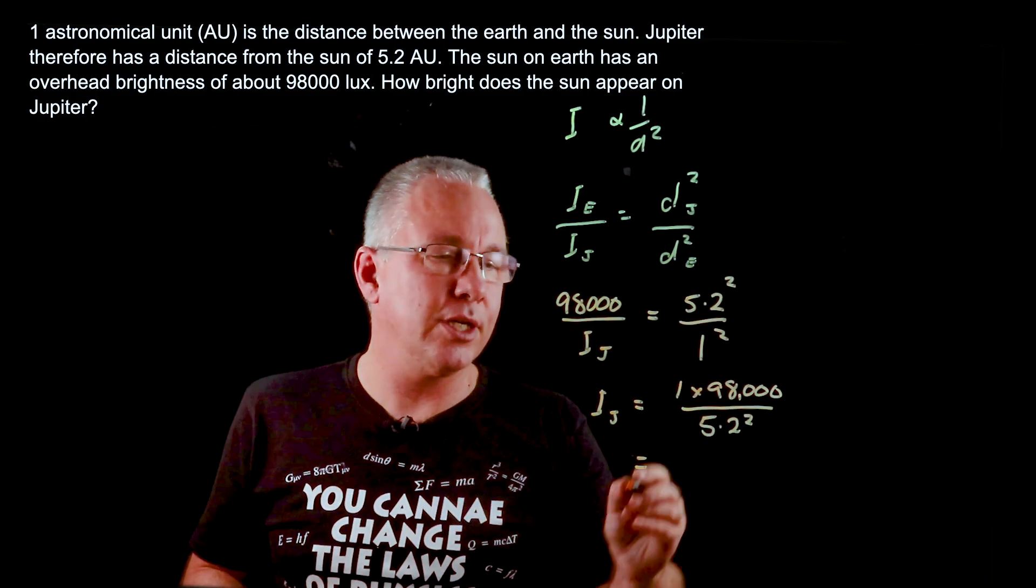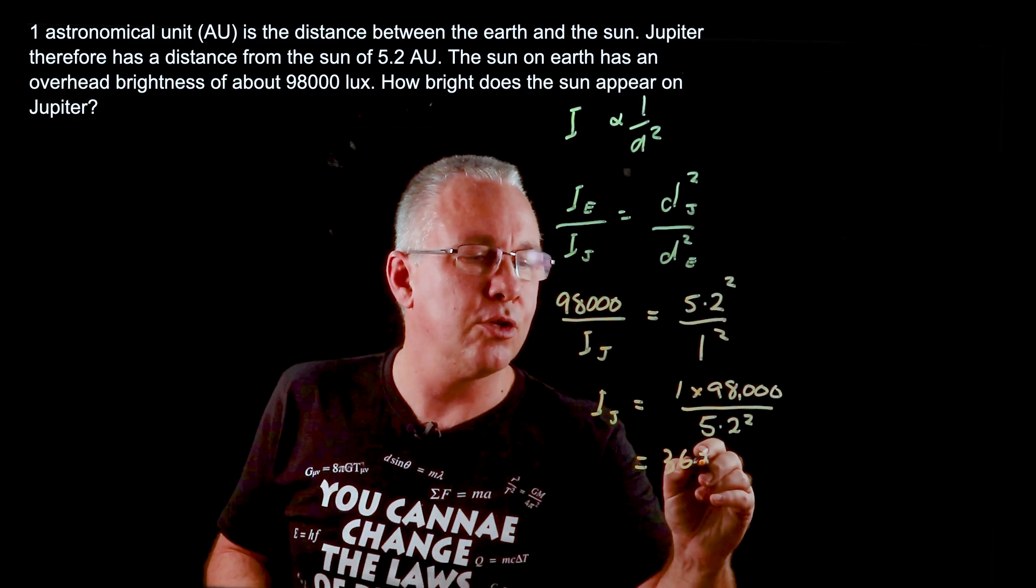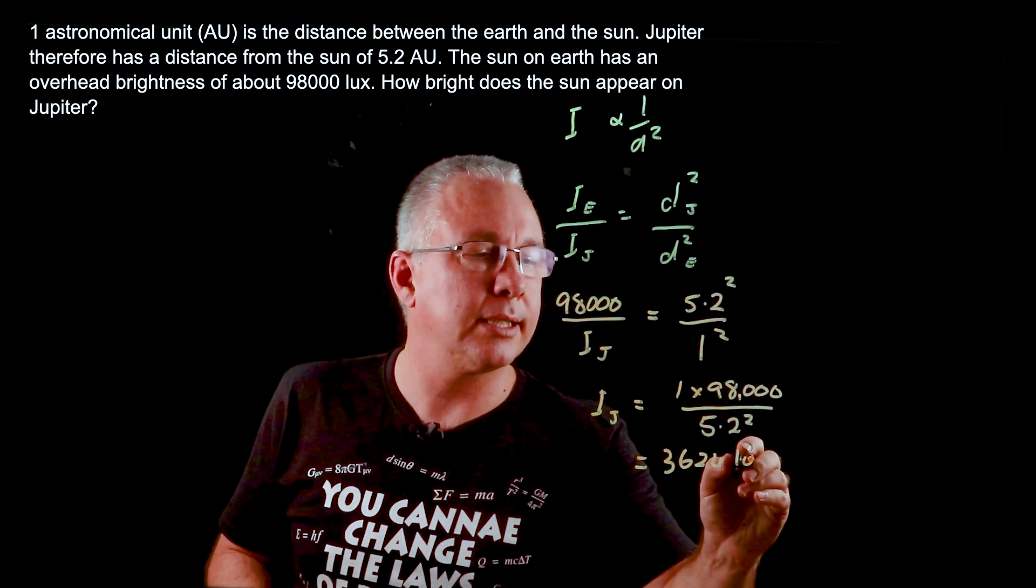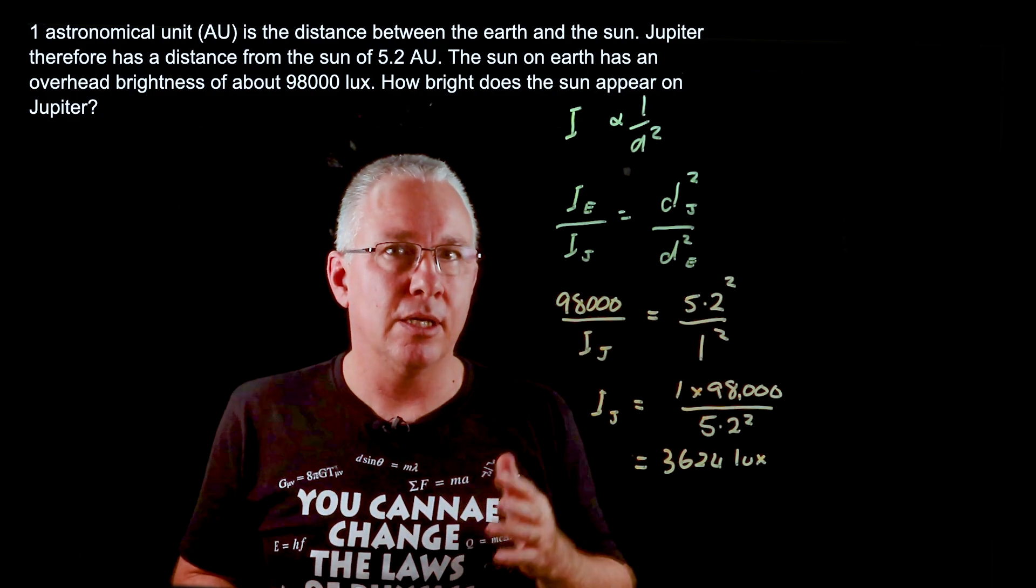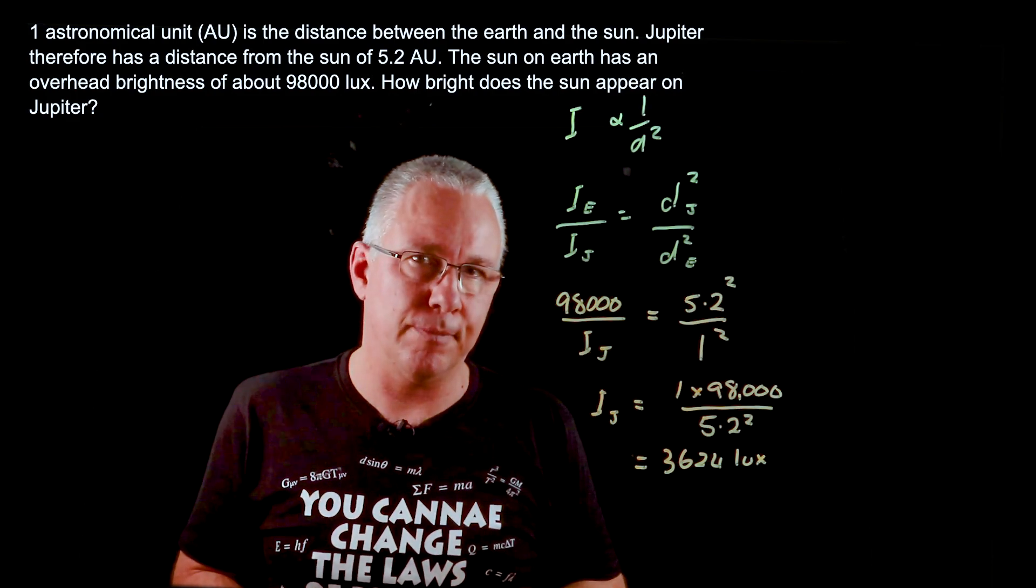And when you calculate that out you're going to get an intensity of 3,624 lux. As you can see, significantly dimmer on Jupiter compared to the Earth.